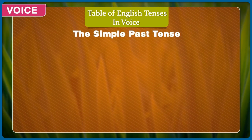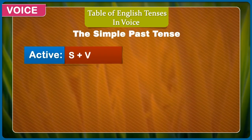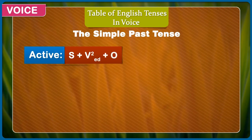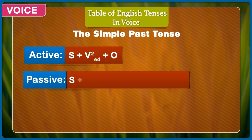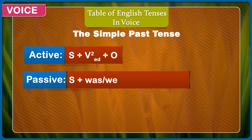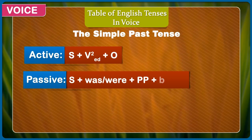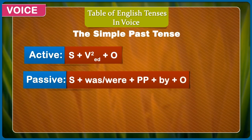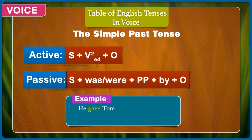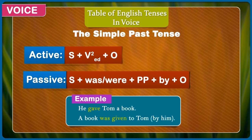The simple past tense. Active: subject + second form of verb (-ed) + object. Passive: subject + was/were + past participle + by + object. Example: He gave Tom a book. A book was given to Tom by him.